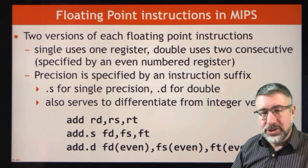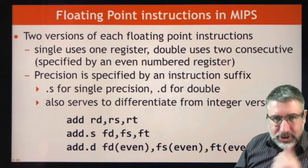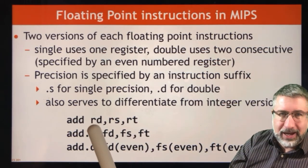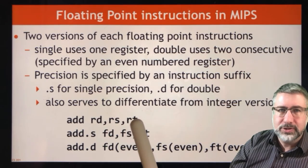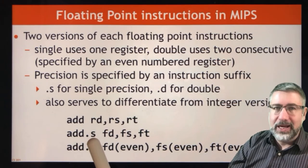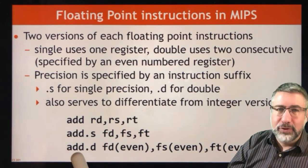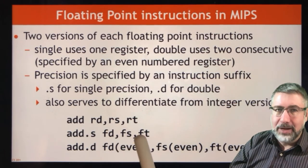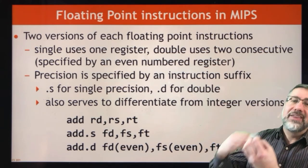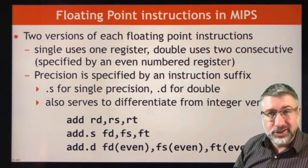Most floating point operations in MIPS are analogous to integer operations, and you specify them as single precision or double precision. A regular R-type ADD goes into a destination register from two source registers. A floating point ADD at single precision is ADD.S, with a floating point destination and two floating point sources. A floating point double precision ADD looks exactly the same, but FD, FS, and FT have to be even so they can use the even register and the subsequent odd register. That's what the .S and .D instructions in MIPS are all about.